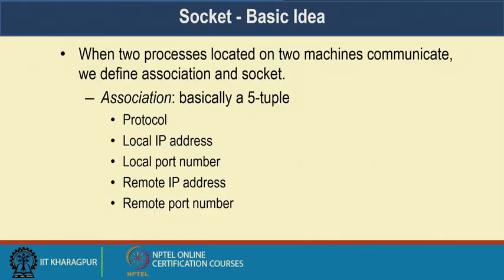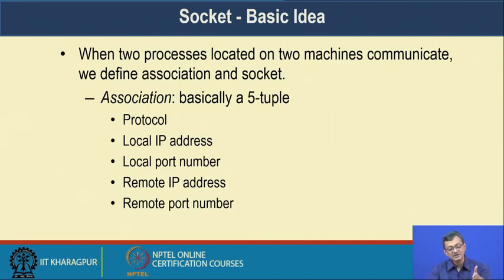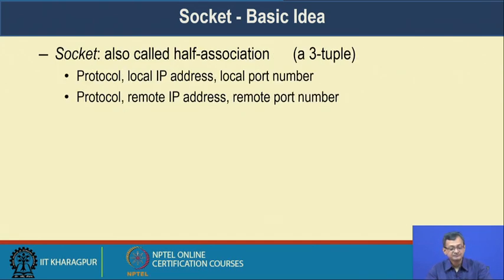Using this socket ID, the rest of the communication — data transfer and other exchanges — goes on. When two processes communicate, we define an association and a socket comprising: protocol, client IP, client port, server IP, and server port. This is also called a half association: protocol, local IP, local port — or on the remote side: protocol, server IP, server port. Once the communication path is established, data transfer proceeds.